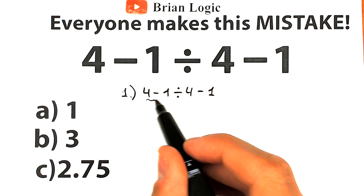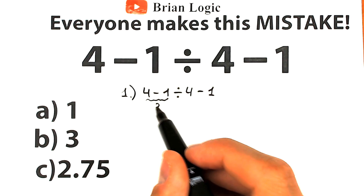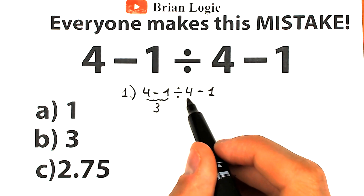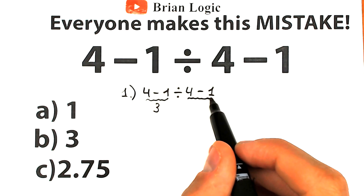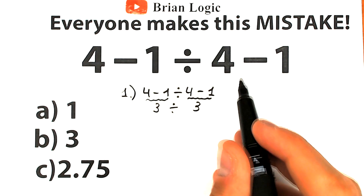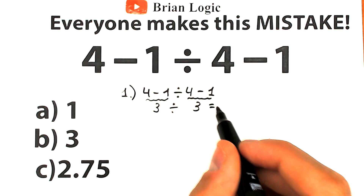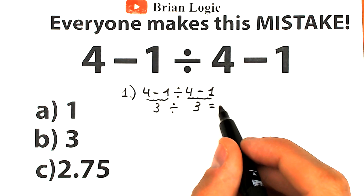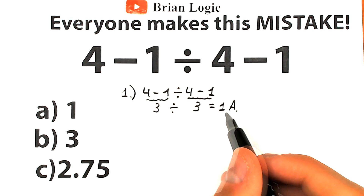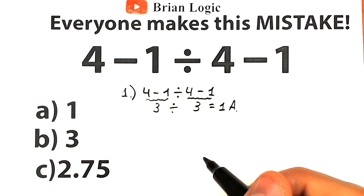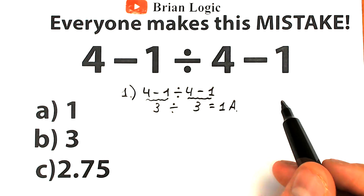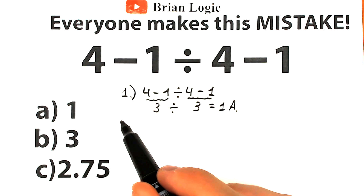They say: 4 minus 1 equals 3, and we have the same expression on the right-hand side — 4 minus 1 equals 3 as well — with division in the middle, so 3 divided by 3 gives us 1. This is option A, and a lot of students say option A is the correct answer and move on to the next challenge.